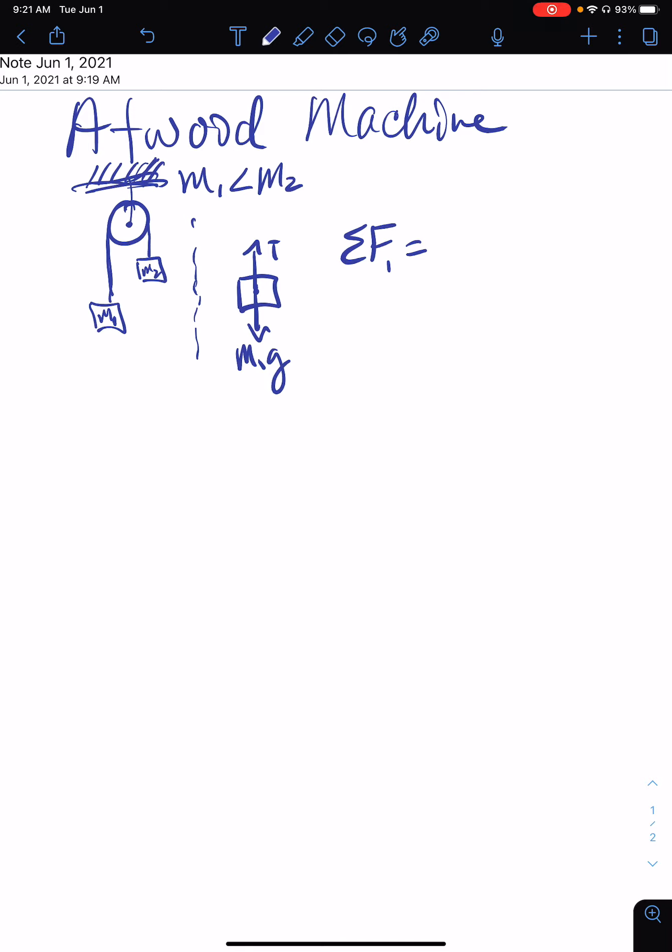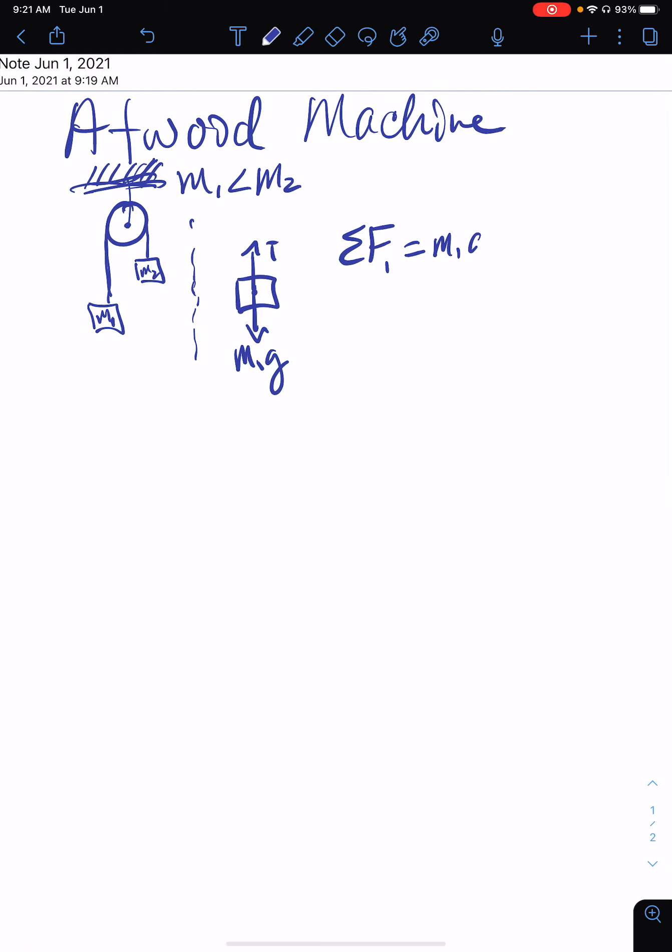Here it's m1 times a. And this is in the y direction. Since m1 is the less massive of the two, when this thing is out of balance the whole system is going to want to accelerate that way, so we're going to call that our plus y direction.